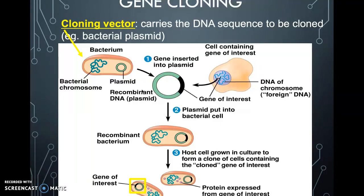Once the gene of interest is inserted into the bacterial cell, the bacterium is now known as a cloning vector. It clones itself through binary fission, replicating the plasmid and the gene of interest into its offspring. Once it has replicated, the cell makes proteins. Scientists can then study how that gene of interest produces proteins and whether it makes a different type of protein.